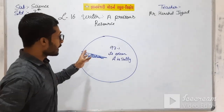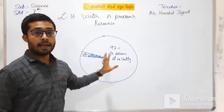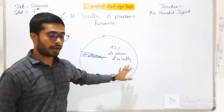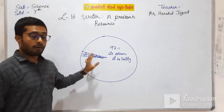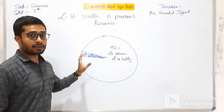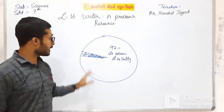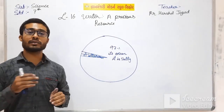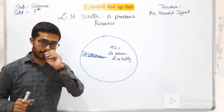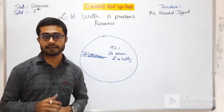So, 97% of water is salty - it is in the oceans but we can't drink it. 2% of water is in the form of ice in the glaciers, so we can't drink it. But there is only 1% fresh water which we drink and use in our daily life. We all know water is a very precious resource. Without water there is no life on the earth. So, we will study about water.